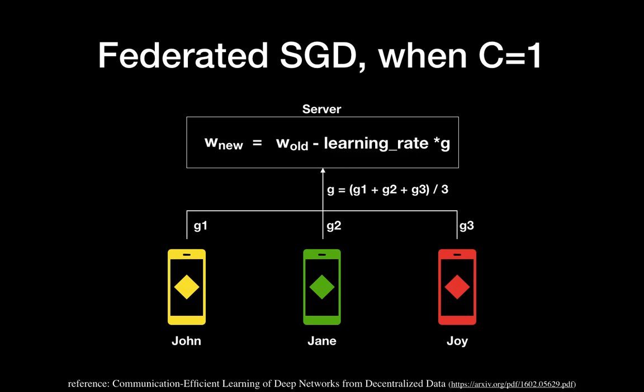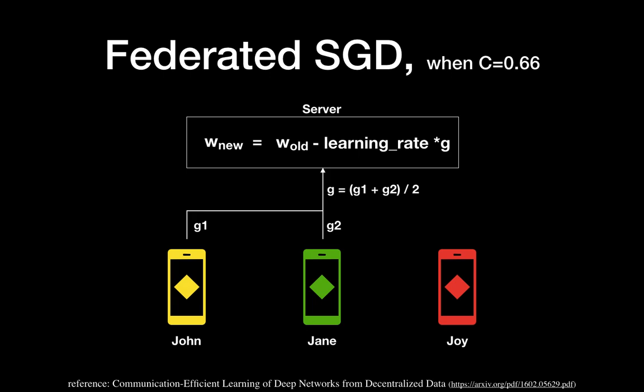C stands for how many clients you want to use — 1 means 100%. So when C is 0.66, and since we have three devices in this example, we use two devices per one communication round. That's how you interpret the C value.